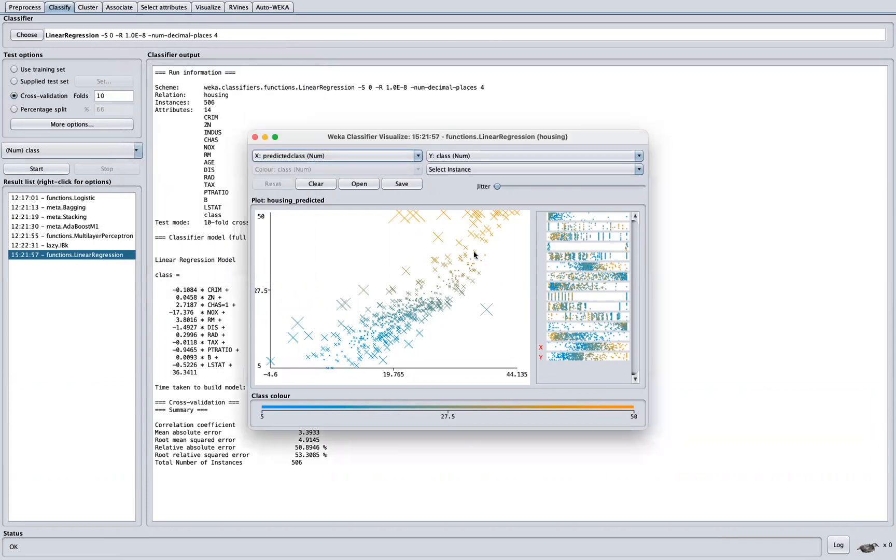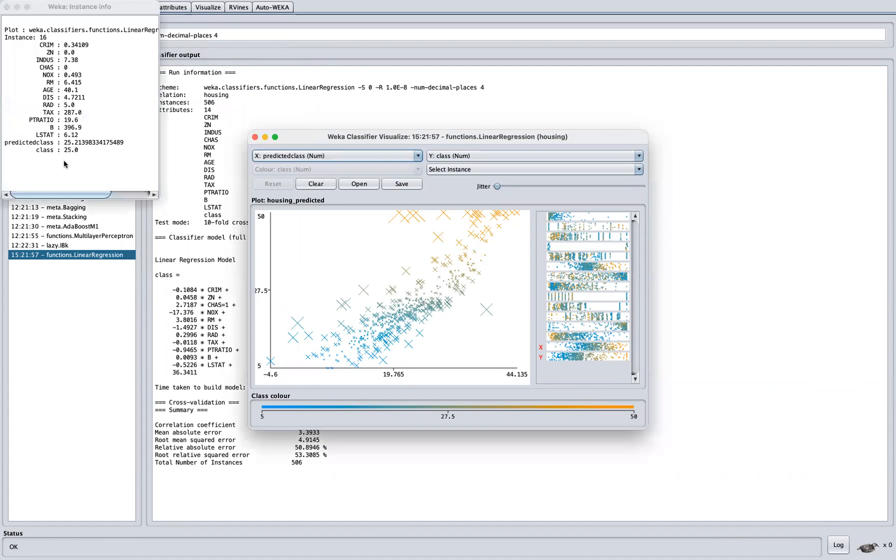As opposed to maybe if we pick a data here, okay, you can see this is dead on, right? The predicted class was so close to the actual class. And you can see here, this is where our predicted line is, our fitted line.